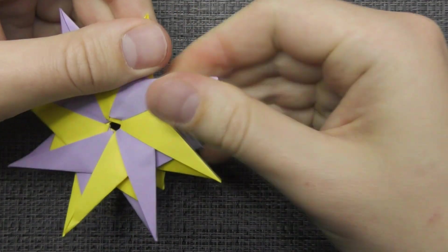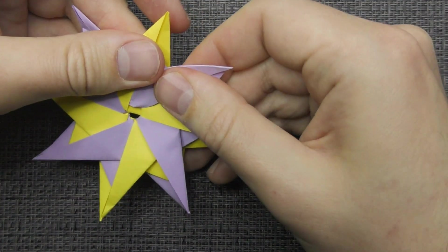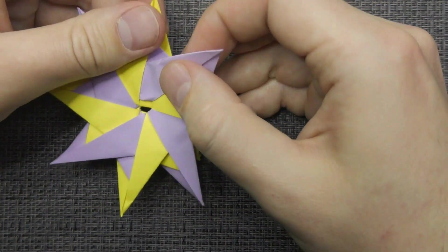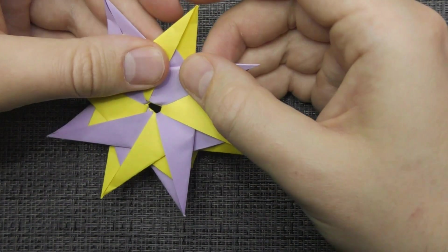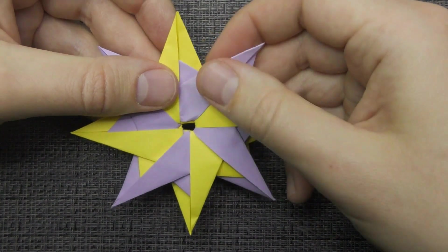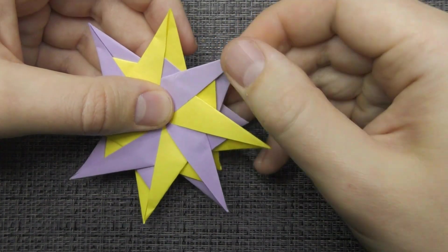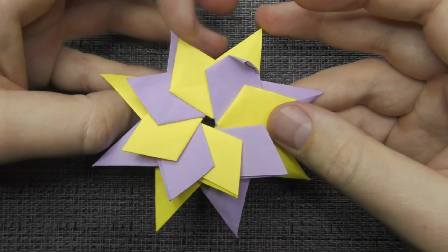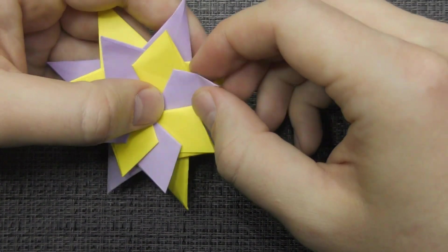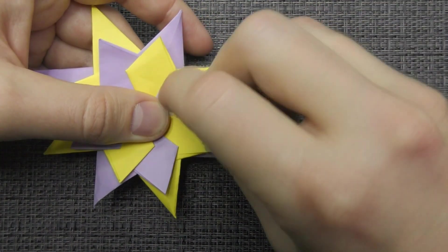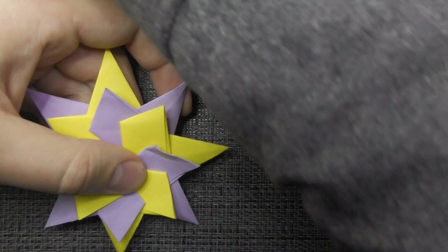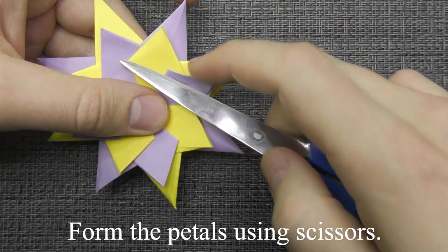Close it with the first modules. Form the petals using scissors.